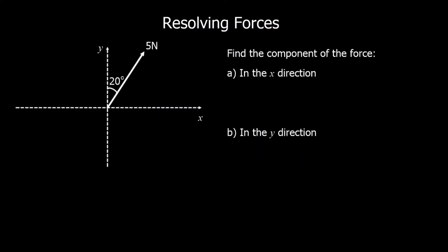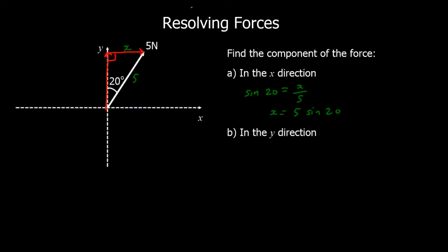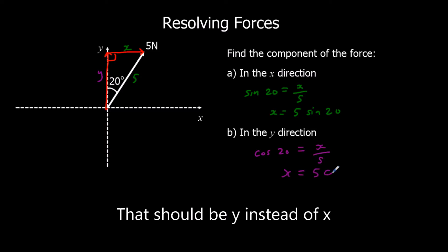Let's have a look at another example. We're going to split this 5N force into a force up the y-axis and a force along the x-axis. So for the x-direction, we're going to work out this force. We've got the opposite and the hypotenuse, so sin 20 equals x over 5, so x equals 5 sin 20. In the y-direction, we've got the adjacent and the hypotenuse, so cos 20 equals y over 5, so y equals 5 cos 20.